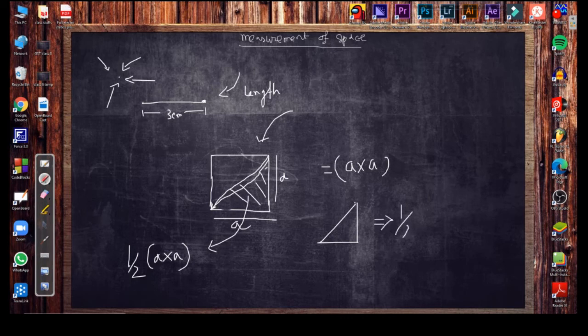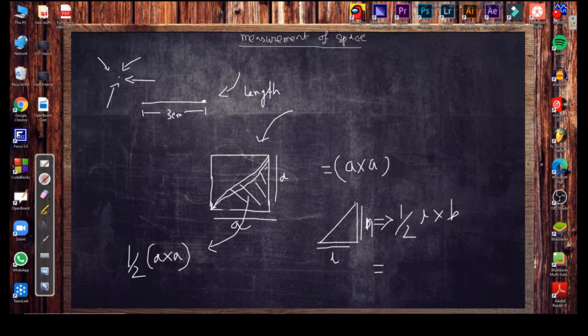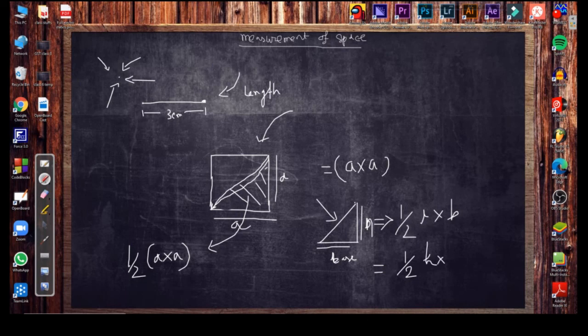If this is length and this is breadth, length into breadth, or you can say if this is marked with height and this is marked with base, then you can say the triangle - that means the right angle triangle - this is called right angle triangle, having the area half of height into base.